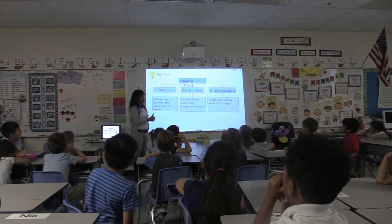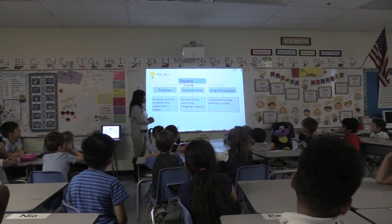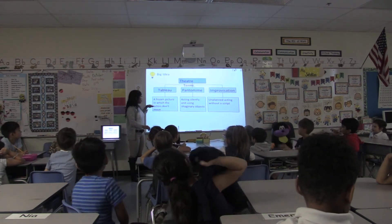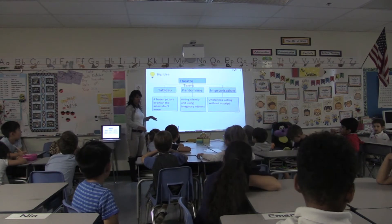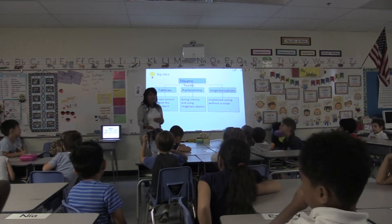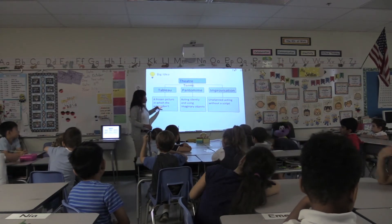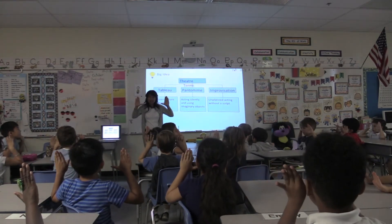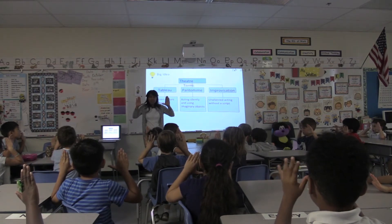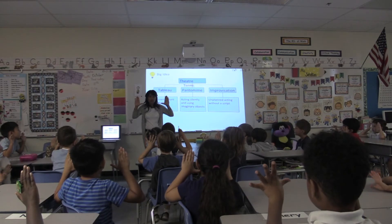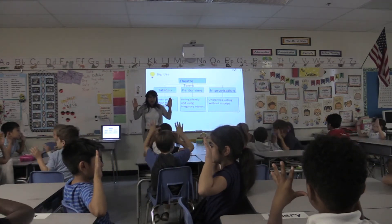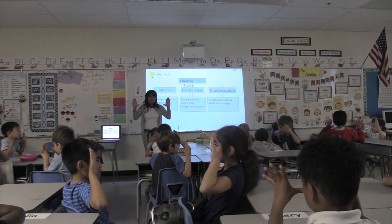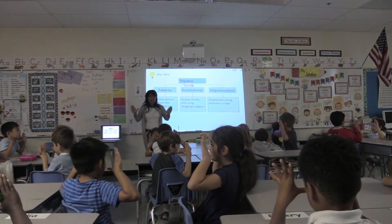Tableau — everybody say tableau. It's a frozen picture in which the actors don't move. Say that with me: 'A frozen picture in which the actors don't move.' We'll talk more about tableau tomorrow and the next day, but today we're just learning the theater terms. So when we say tableau, we do this — like a frozen frame, you don't move. Can you do the movement for tableau with your partner? It's a frozen picture and the actors don't move. Show me tableau — very nice.